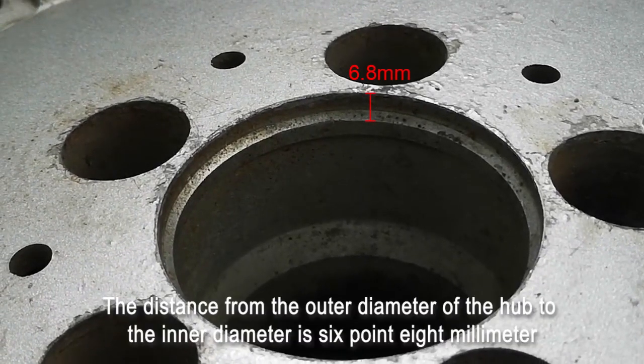The distance from the outer diameter of the hub to the inner diameter is 6.8 mm.